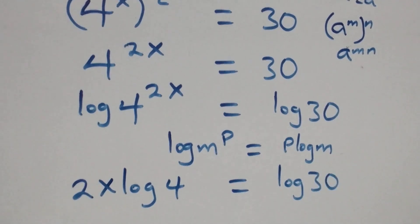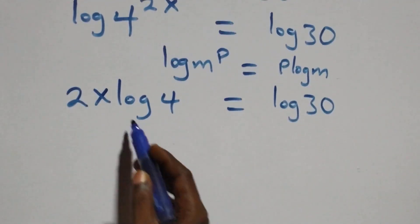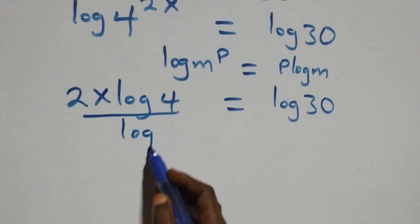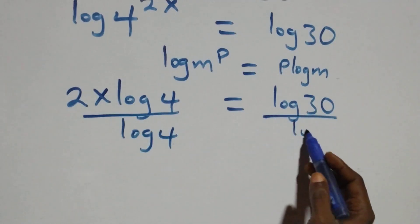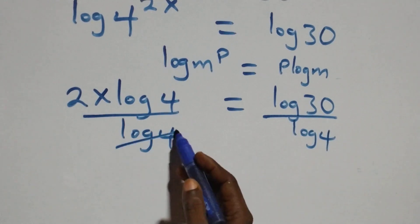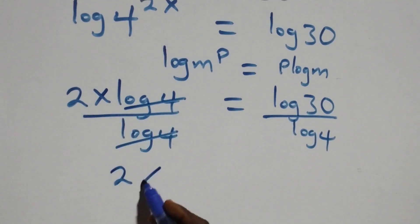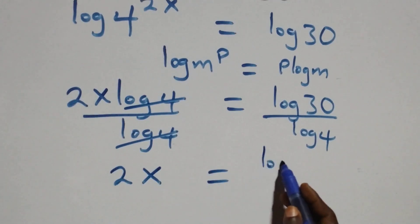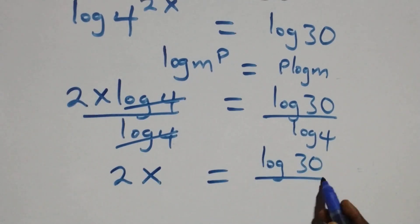We then divide both sides by log four. Log four cancels on the left side, and we are left with two x, which is equal to log thirty over log four.